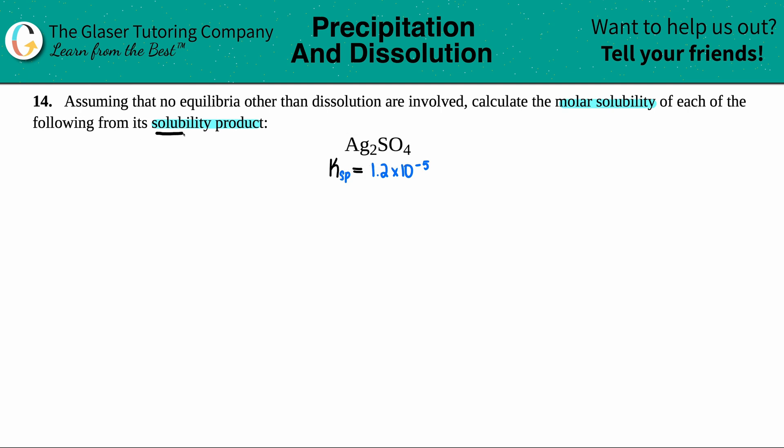And remember, a solubility product is just a KSP, right? SP, solubility product. So I went in the back of a textbook to find out what the KSP of Ag2SO4 is, 1.2 times 10 to the negative fifth.